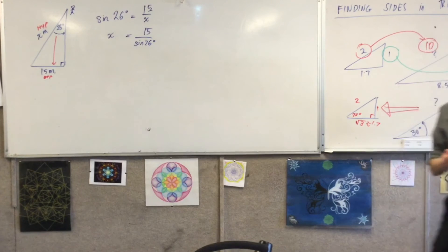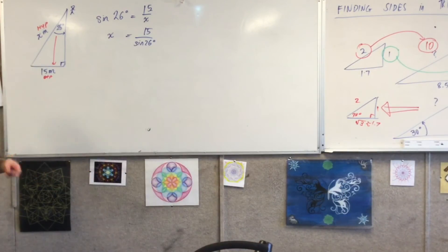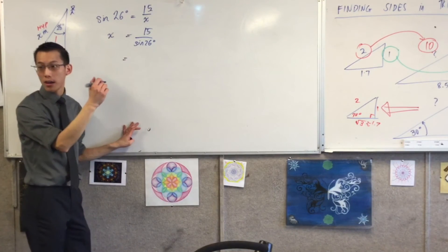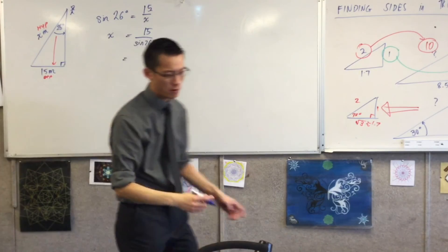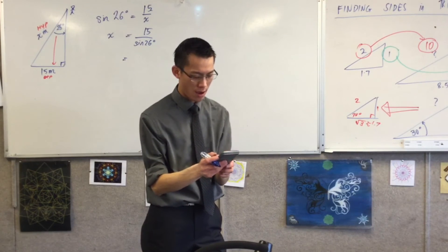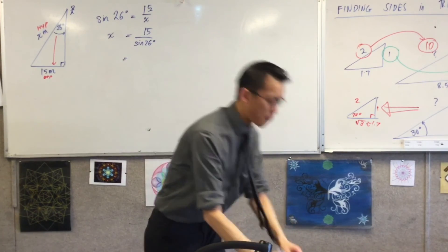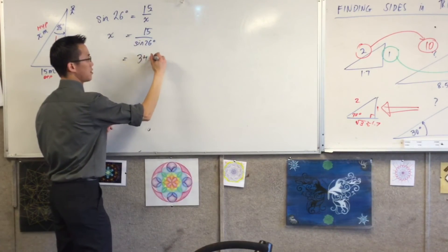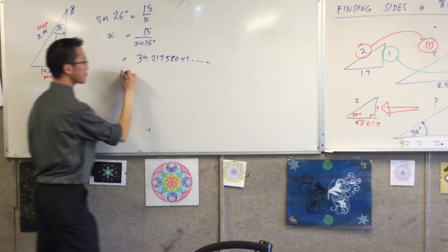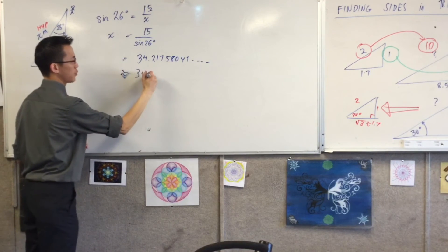I doubt it, I doubt it. So with your calculator there, 15 divided by sine 26, and it's going to give you a number. Can I get one, actually can I get all the decimal places and then we'll approximate together, what do we get? 34. 34. Oh yeah sorry I'm in the wrong mode. 34 point 2 1 7 5 8 4 9. So let's just go one decimal place.